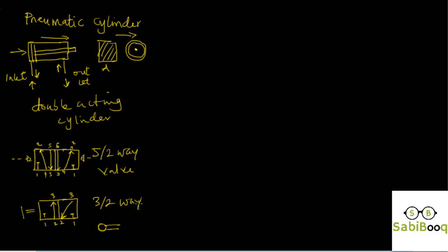Knowing this, we now have a basic understanding of how to answer the question in the next video. We have a three-two-way valve that is mechanically actuated — roller or manual. We also have a five-two-way valve that is pilot actuated or pneumatically actuated. And we have a double acting cylinder with inlets and outlets on both sides. In the next video we will answer a question, and with this basic understanding we will be able to tackle it. See you and take care.